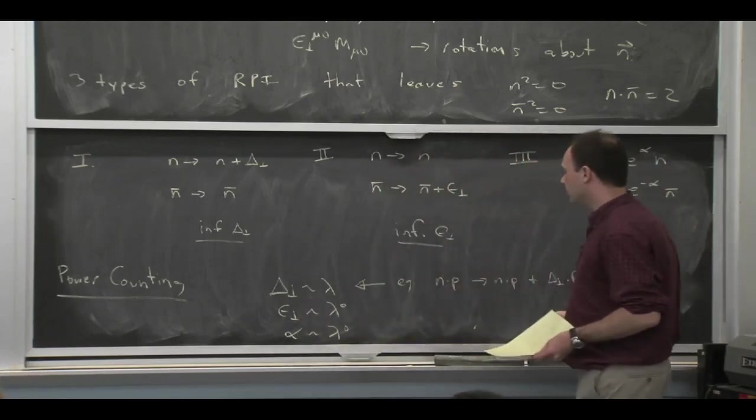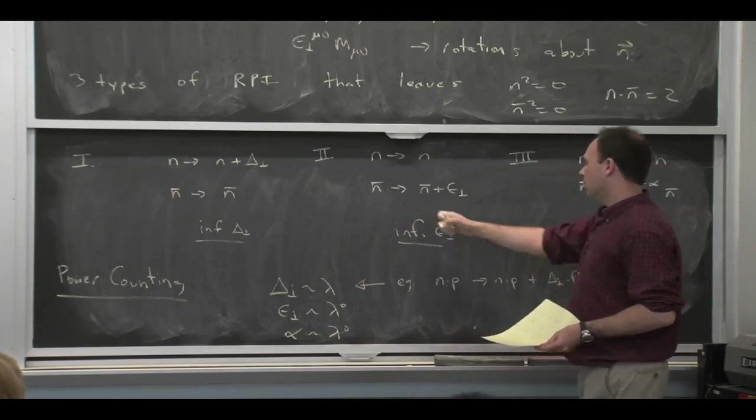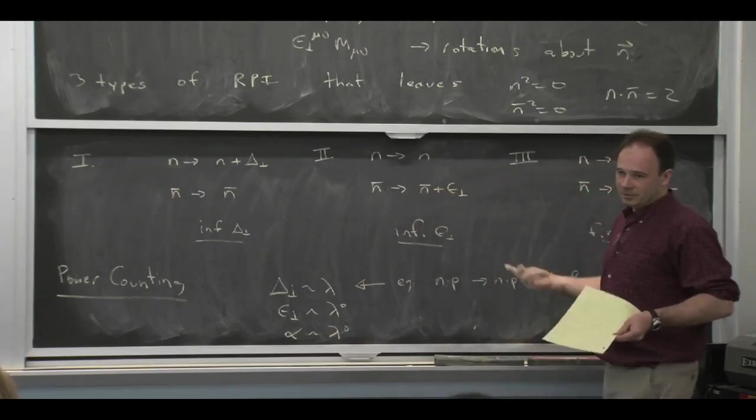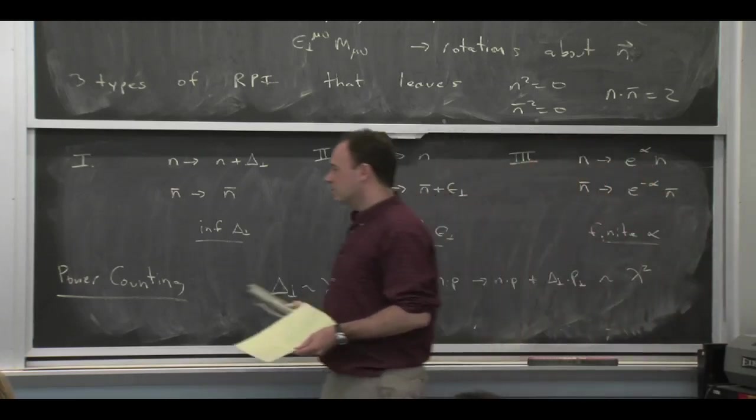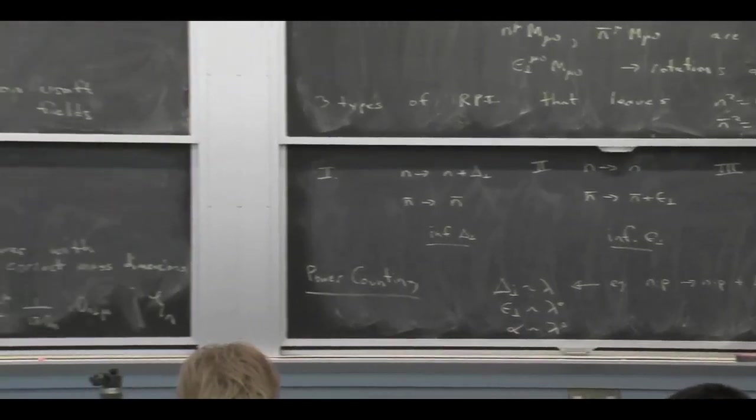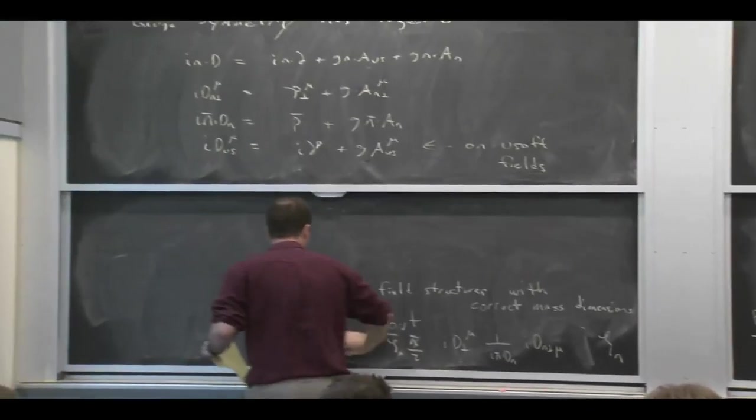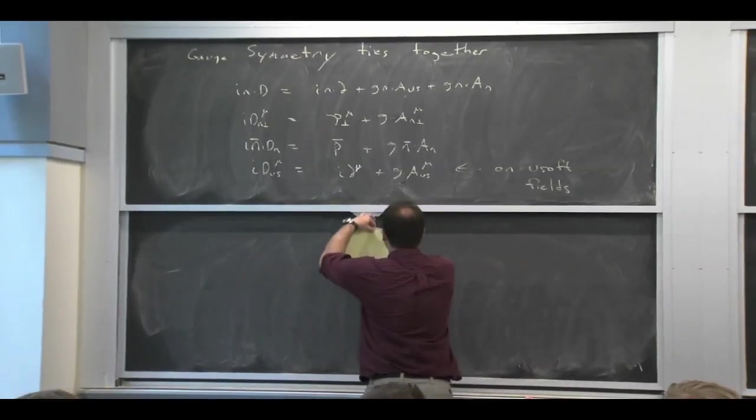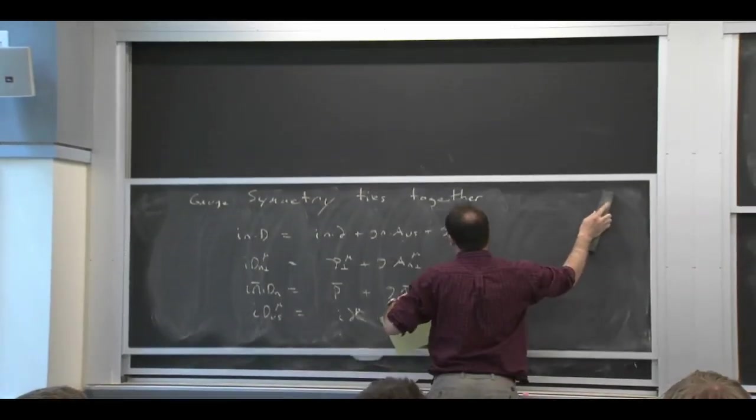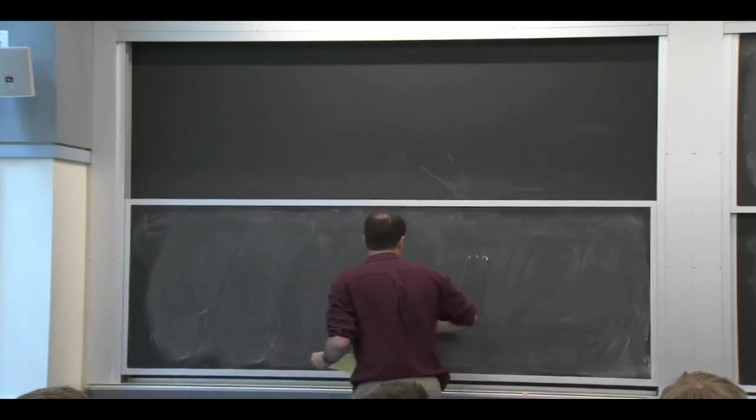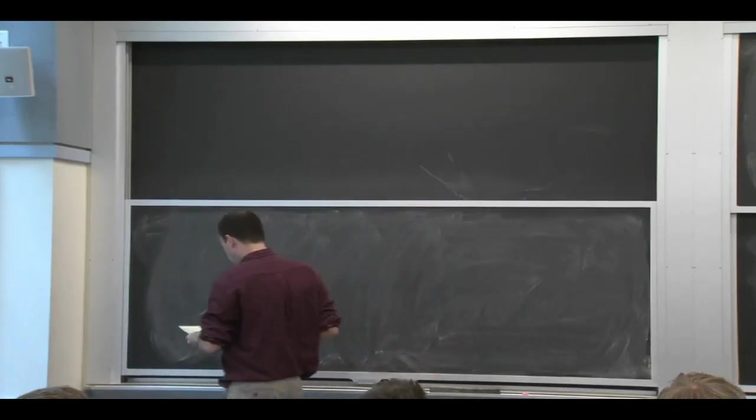So imposing that this thing is of order lambda squared says that this is true. If you go through the same logic for the other guys, the n bar component was order lambda zero, so you can make the epsilon perp of order lambda zero. It doesn't cost you anything because there's no constraint. So you're not making something that would mess up the power count.